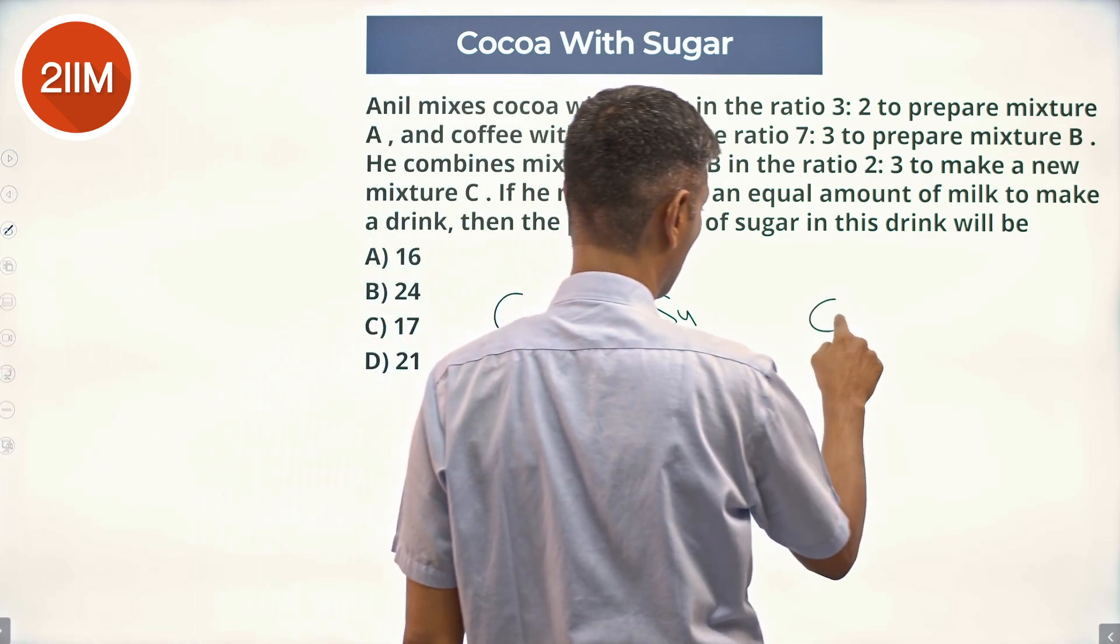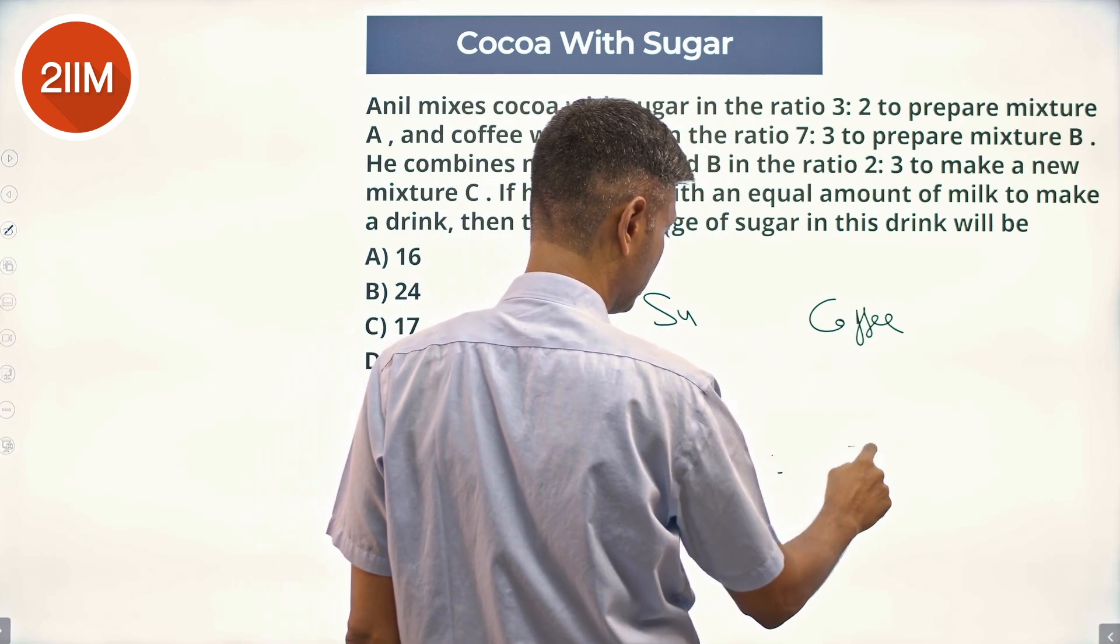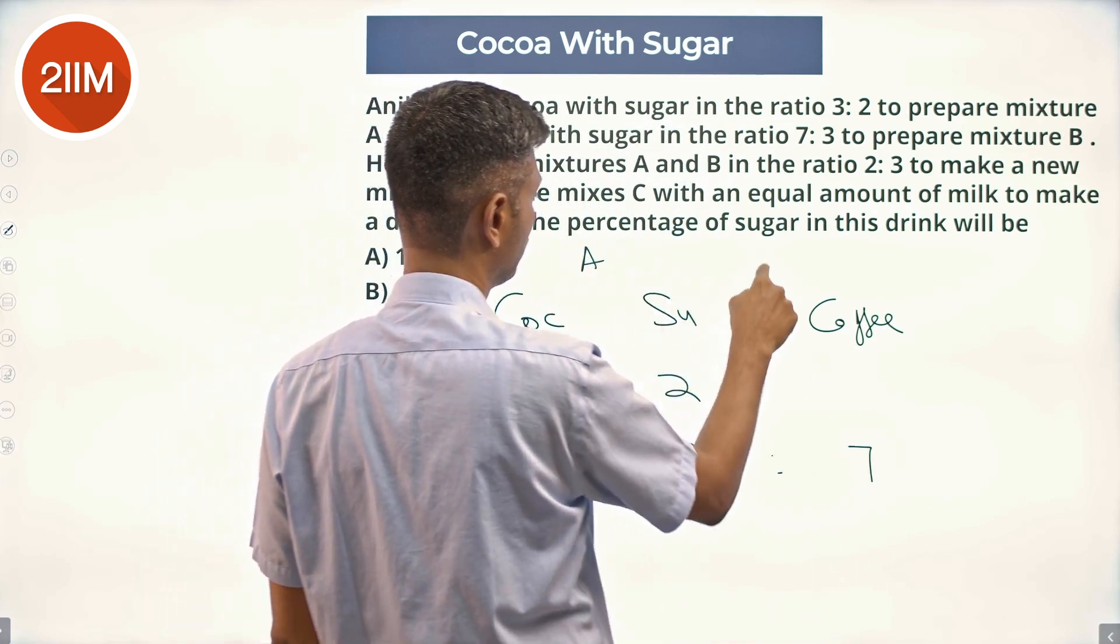So, sugar and coffee 7 to 3. So, 3 to 7. This is mixture A, this is mixture B.